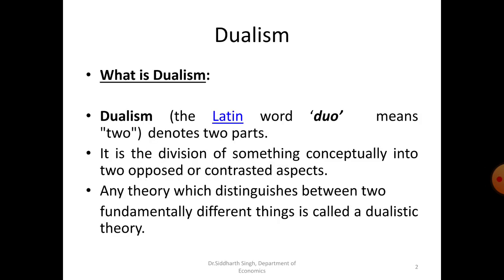What is dualism? Dualism is derived from the Latin word 'duo' which means two. So anything which can be divided into two is dualism. Dualism theories are basically the division of society, division of the economy, division of the production function into two. It is the division of something into two opposed aspects. Any theory which differentiates between two fundamentally different things is called a dualistic theory.